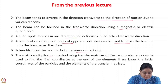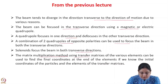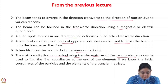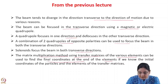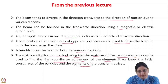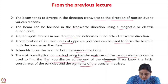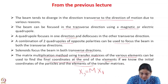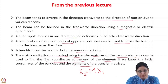By using the matrix multiplication method, the transfer matrices of the various elements can be used to find the final coordinates at the end of the elements if we know the initial coordinates of the particles. So if we know the transfer matrix and the initial coordinates of the particles, we can find out the final coordinates of the particles.